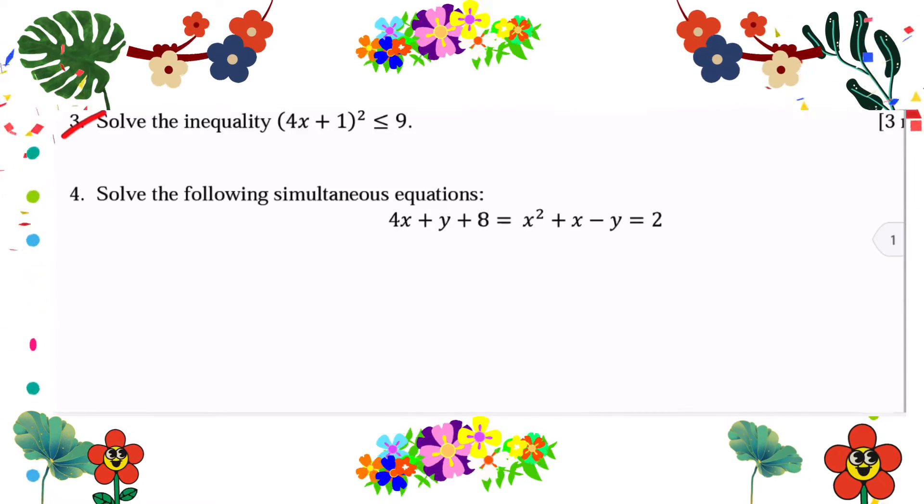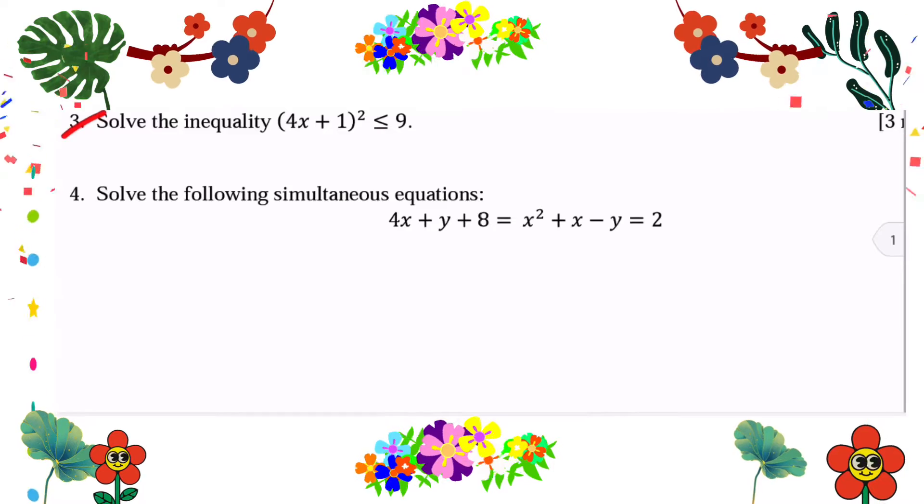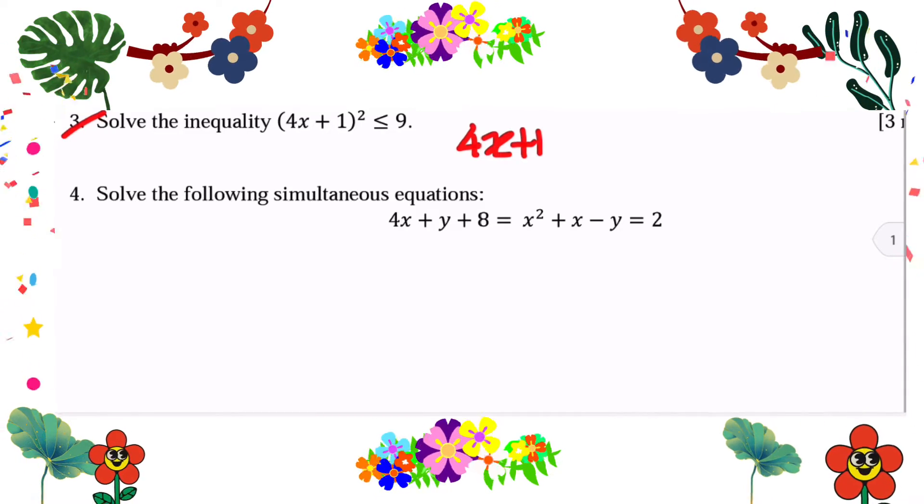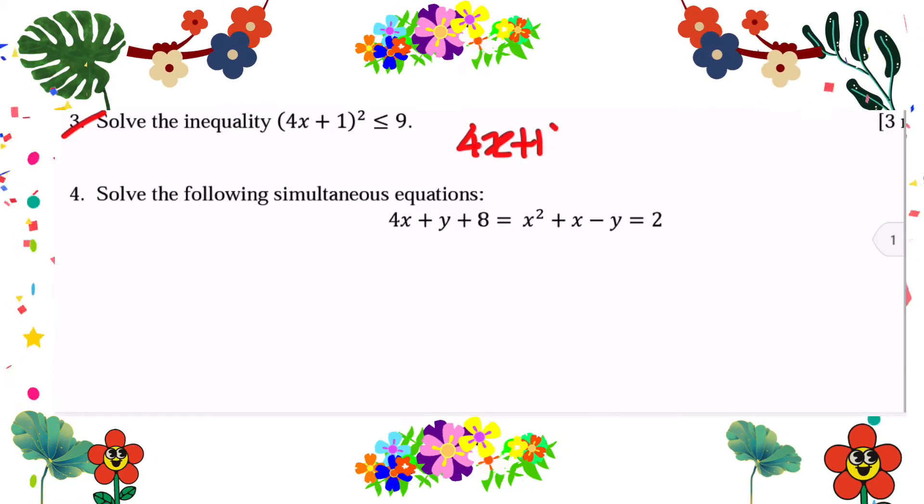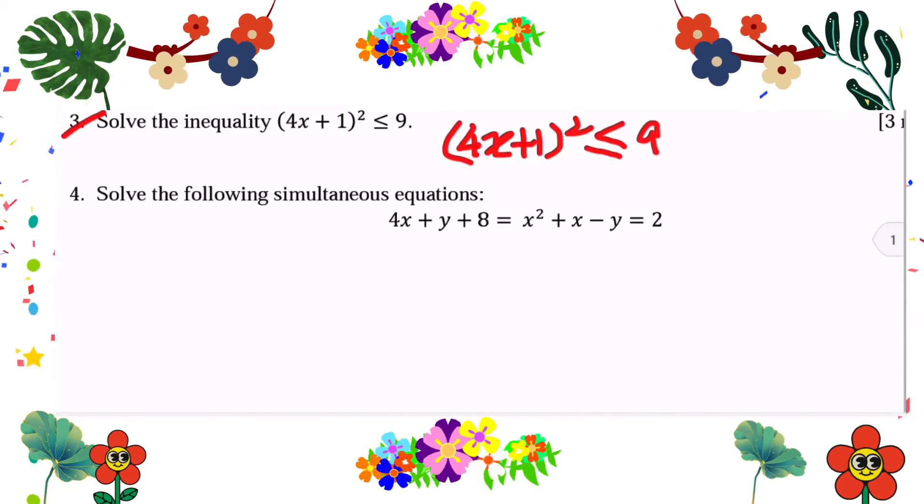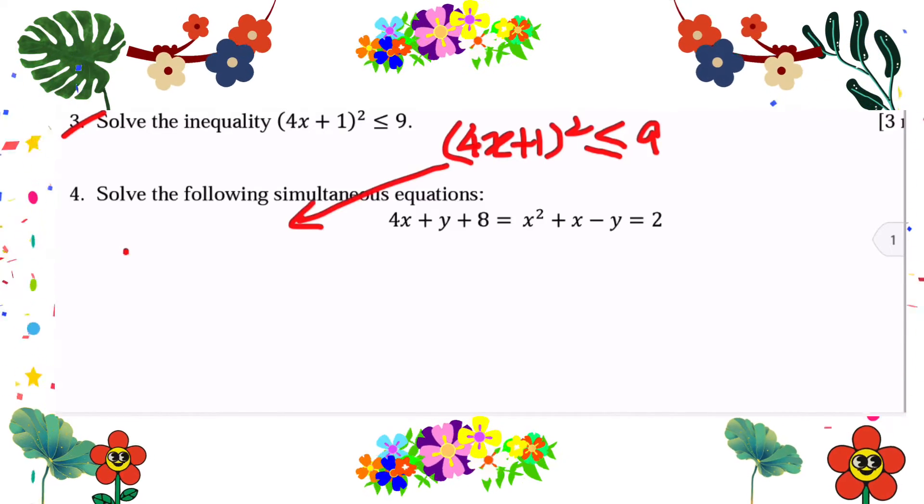Question number 3. Solve the inequality (4x + 1)² ≤ 9. First of all, we need to rearrange the quadratic function into general form. So let's do expansion.